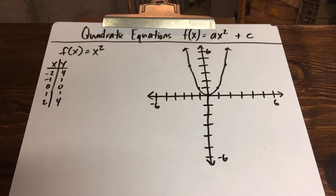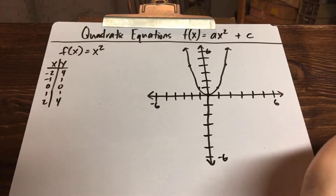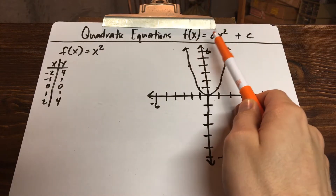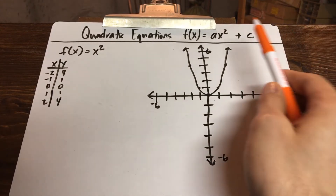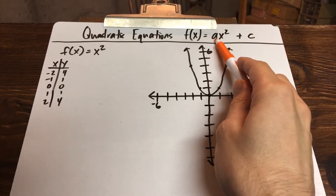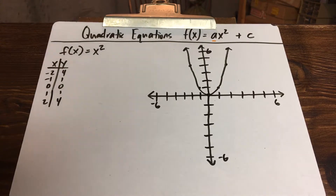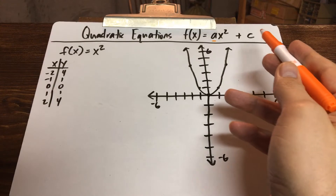Hey everybody, welcome back. In today's video we're going to look at quadratic equations again. This time we're looking specifically at quadratic equations in the form of f of x or y equals ax squared plus c. In my most previous video we focused on the letter a and what it does depending on what type of number it is — that affects the shape of your parabola. Today we're going to look at the letter c.